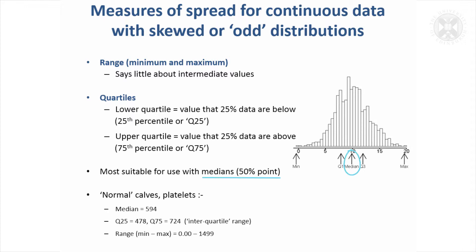So it gives you a feel for the spread of the distribution, but of course it doesn't actually measure the accuracy of the median itself. It just tells you how much the data are spread about the median. But it is most suitable for use with medians, because you've got the 25th percentile and the 75th percentile, and the median conveniently falls in the middle as the 50th percentile.